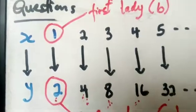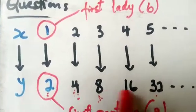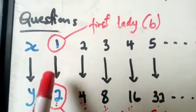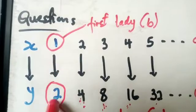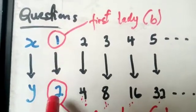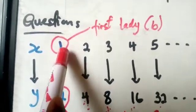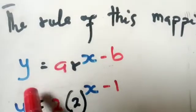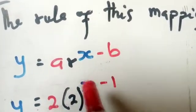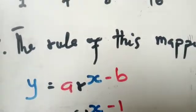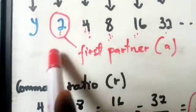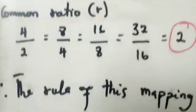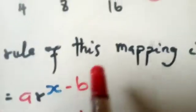So from our example, the partners (y-values) are 2, 4, 8, 16 — the first partner is 2, so a equals 2. The ladies (x-values) are 1, 2, 3 — the first lady is 1, so B equals 1. Remember: partner comes before lady in the formula.